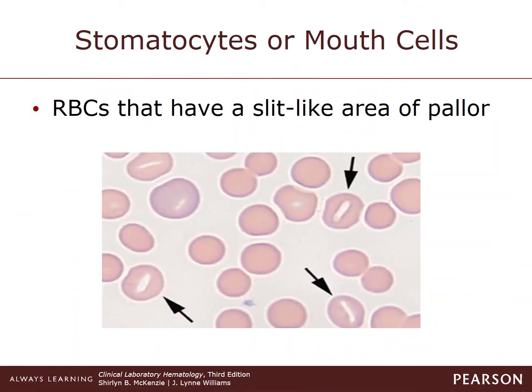Stomatocytes, or mouth cells, are red cells that have a slit-like area of central pallor. The shape is thought to be the result of increased lipid content in the inner leaflet of the membrane bilayer. It can also be seen as an artifact.